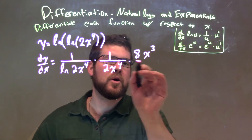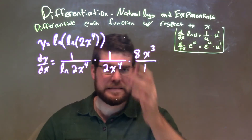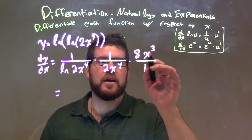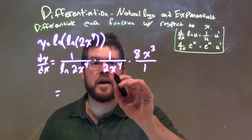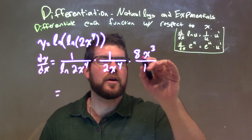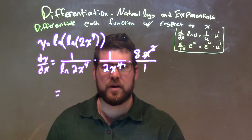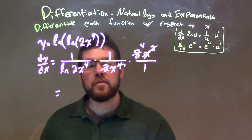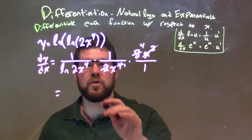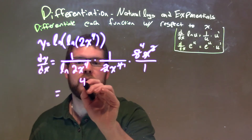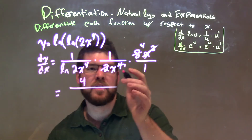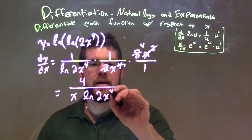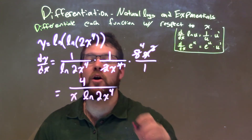Multiplying that out and keeping it neat, we now simplify. I can see that x to the third over x to the fourth reduces — x to the fourth becomes x to the first. And 8 over 2 gives us 4. So we're left with just a 4 in the numerator. Putting x out front, we have x times the natural log of 2x to the fourth power in the denominator, giving us our final answer.